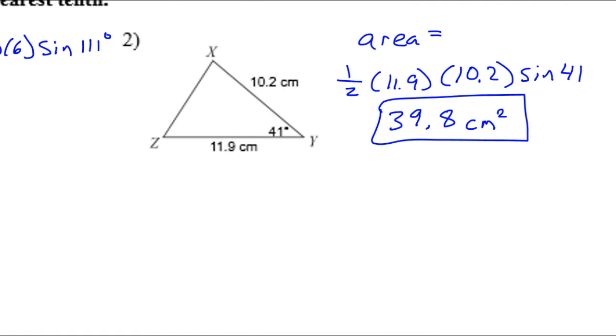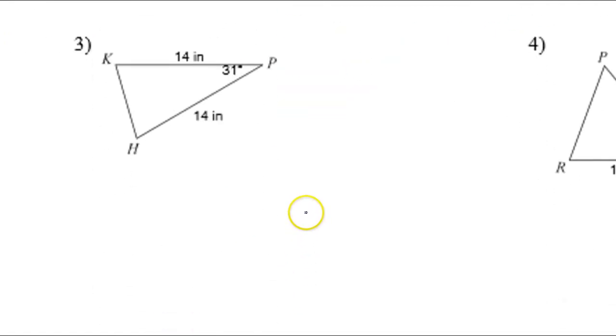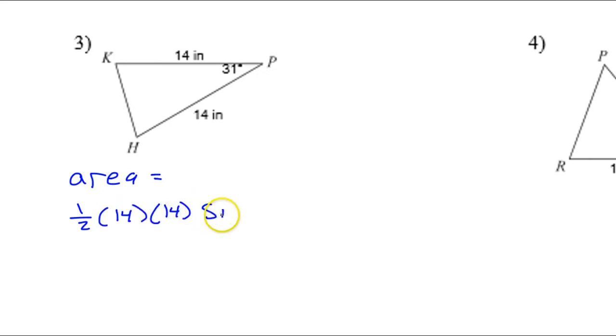Let's take a look at problem number three. If I want to find the area of this triangle, it's going to be one-half 14 times 14 times the sine of 31.